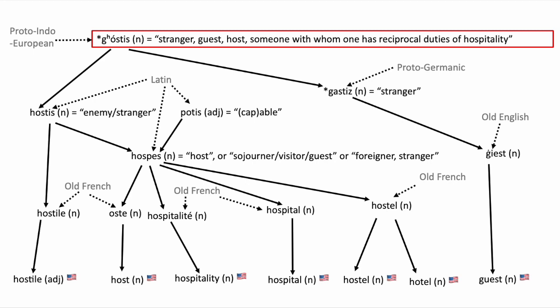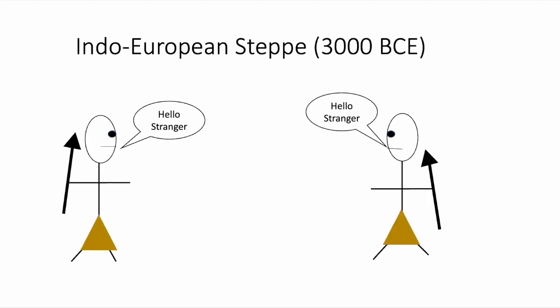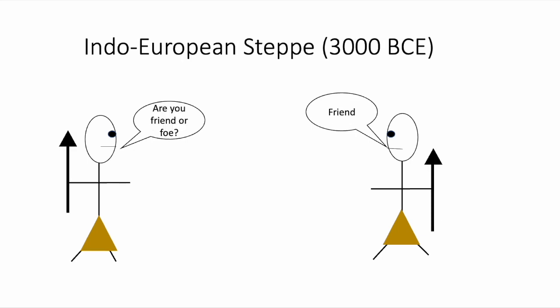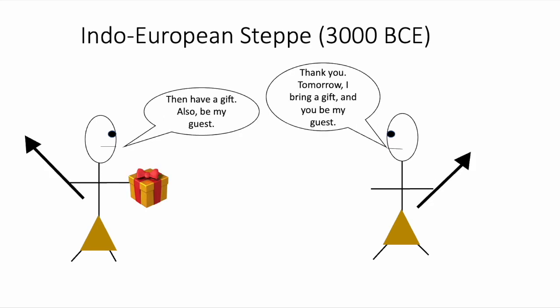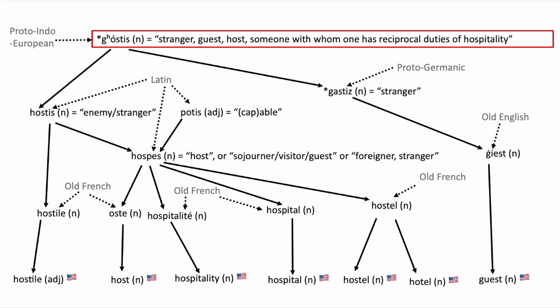Chostis denoted the concept of the guest-host relationship in Proto-Indo-European society. Basically, in that primitive society — and I guess still today — when two strangers meet for the first time, they are potential enemies. But after they become acquainted and are no longer enemies, for example through things like gift-giving, a new relationship begins where the two sides will at times be guests and at other times be hosts. Basically, they both have mutual and reciprocal duties associated with hospitality. So a number of words in modern English related to concepts involving hospitality, and also the potential for becoming an enemy, are descended from this Indo-European concept of chostis.